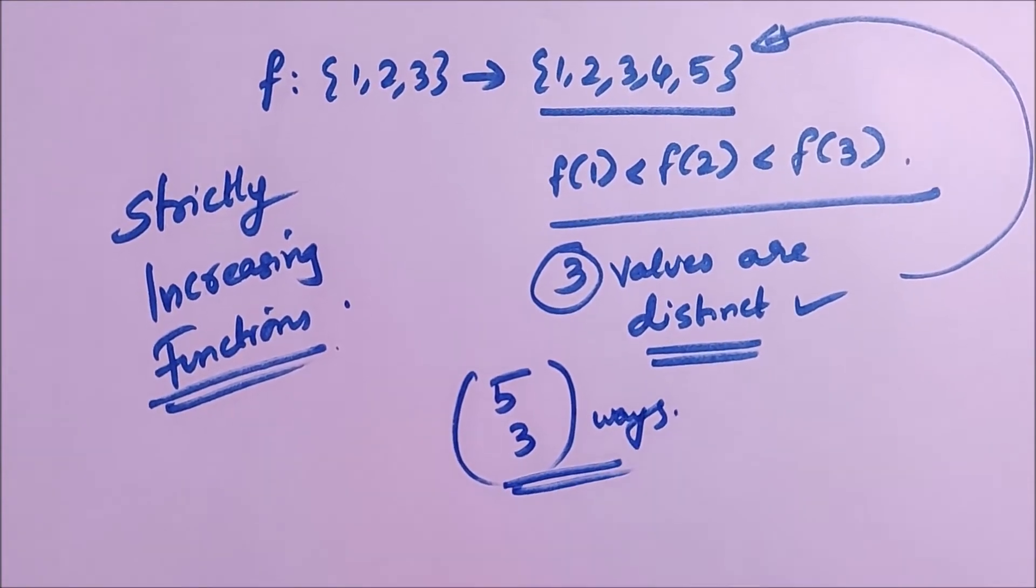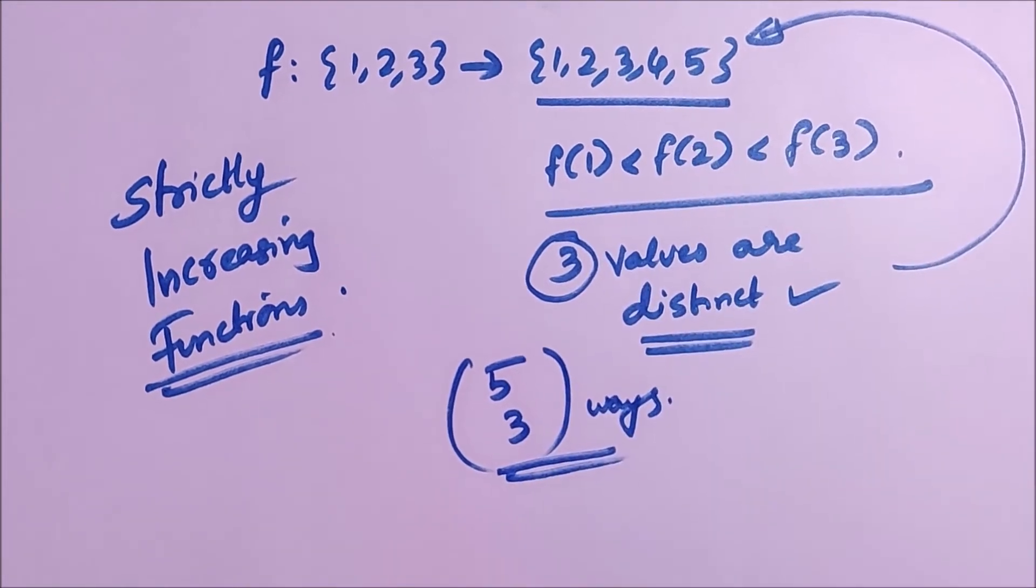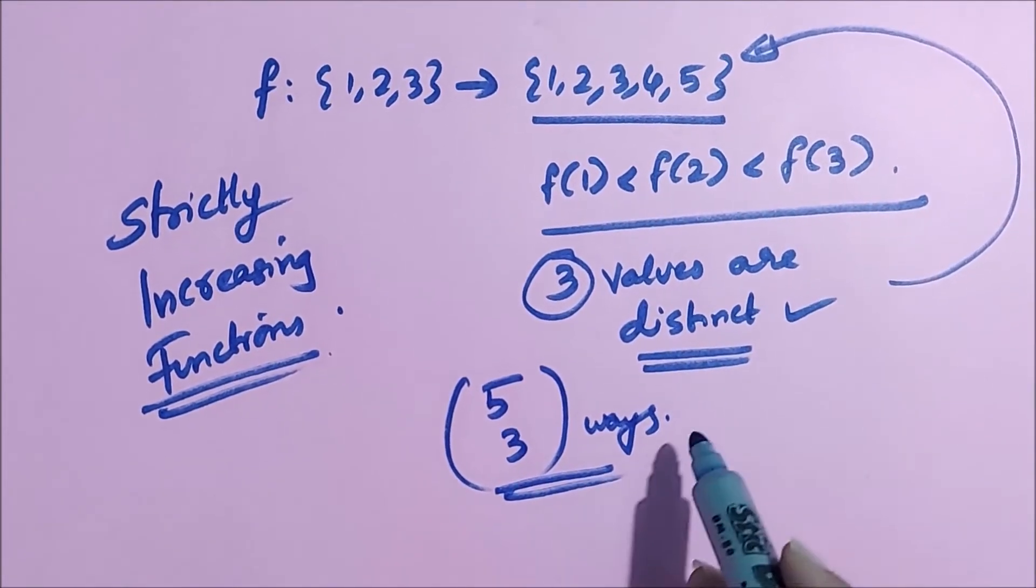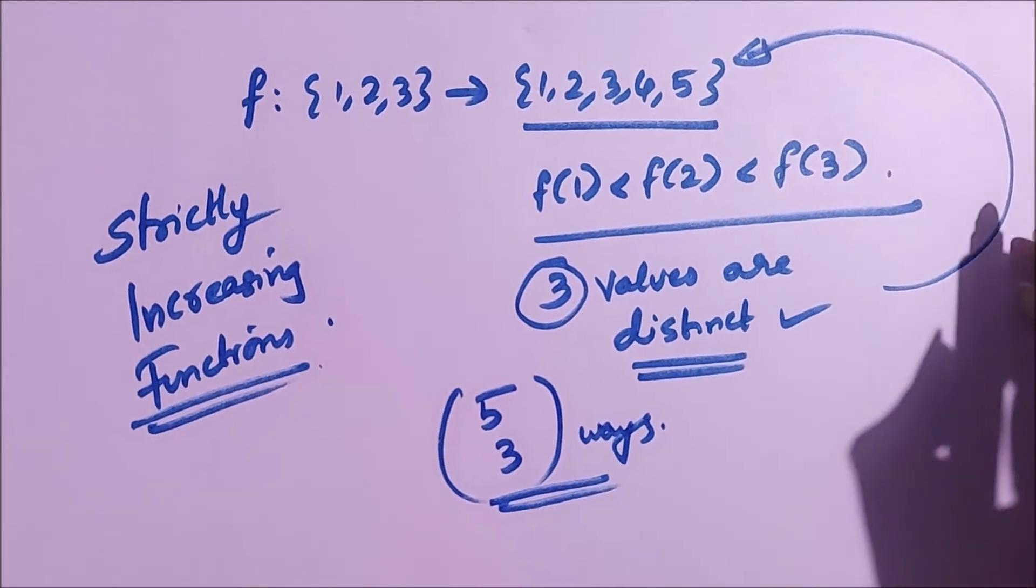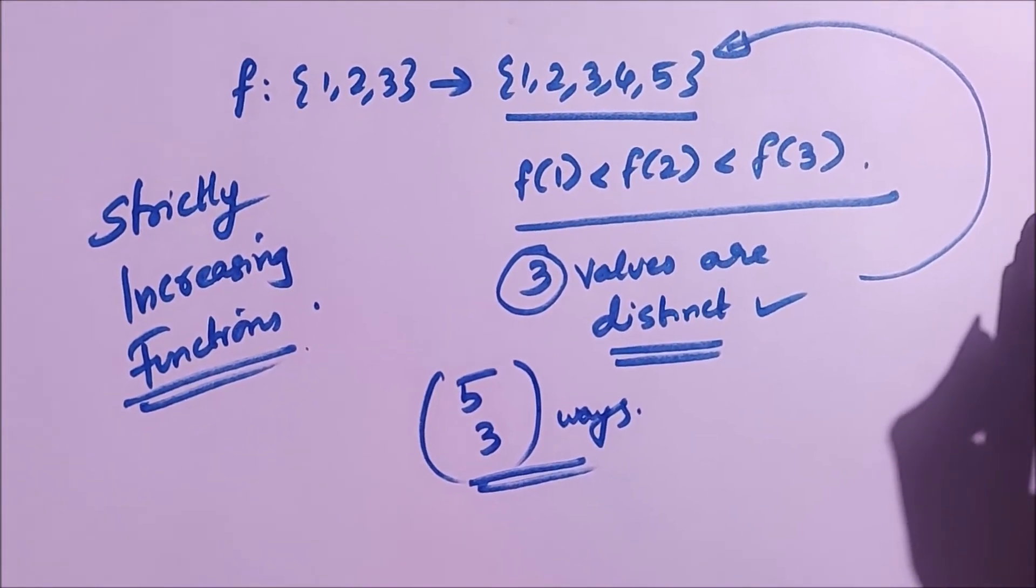So let's say we selected these three values from these five values. Obviously, we can do that in 5 choose 3 ways. Let's say we selected that. Do we have to do anything more?